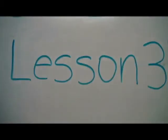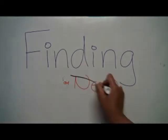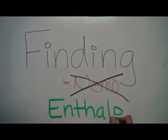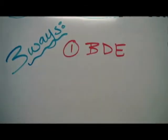Lesson 3: Finding Nemo. Hey, that's not right. Finding Enthalpy. There are three ways to find delta H. Number one, bond dissociation energy, or BDE.